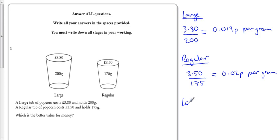So you can see that it's cheaper to get the large, slightly cheaper. It's only 1.9 pence per gram instead of 2 pence per gram. So large is the better value.